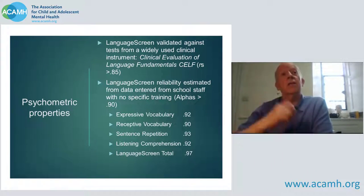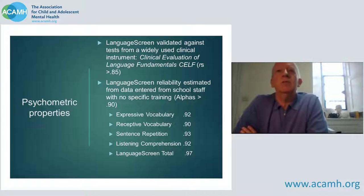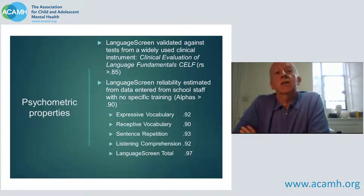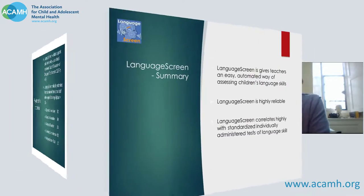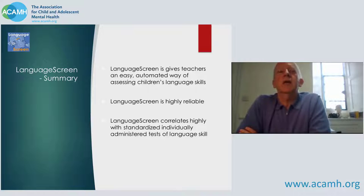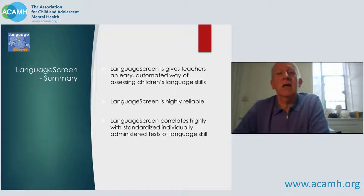In terms of psychometric properties, Language Screen was validated against tests from the CELF, as I've just described. The individual correlations are all high. In terms of reliability, all the individual tests have reliability coefficients in excess of 0.9 and the total score from the test has a very high reliability of 0.97. So to summarize, Language Screen gives teachers an easy automated way of assessing children's language skills. It's a highly reliable test that correlates highly with standardised individually administered tests of language ability.